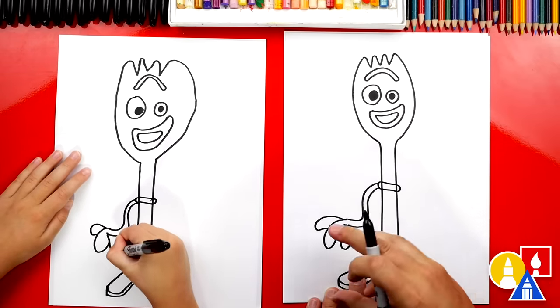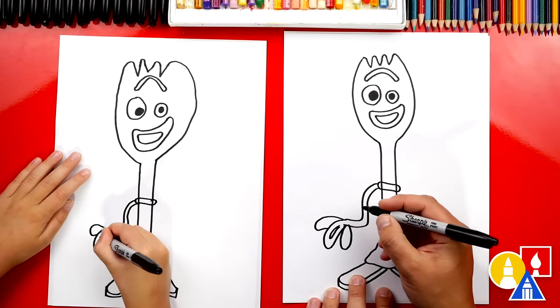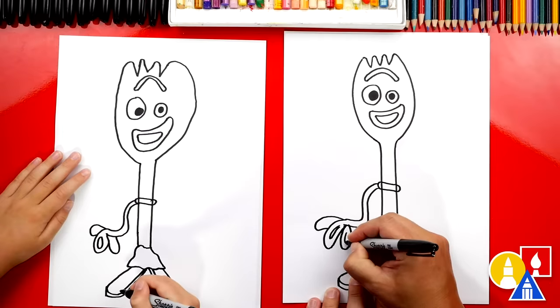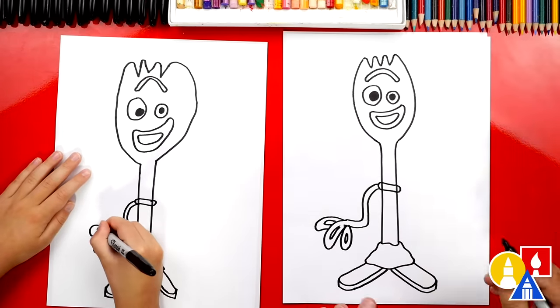You could really change these any way you want. Let's draw the inside of the first loop. Draw another shape on the inside of this one and another shape over here for the left one.